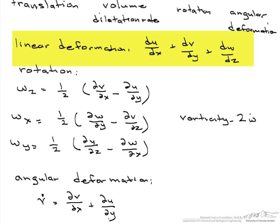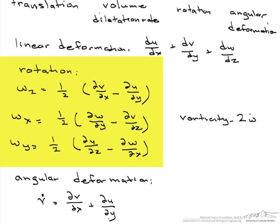So if for example, our linear deformation equals 0, then the fluid is incompressible. And if our rotation equals 0, then the fluid is what's known as irrotational.